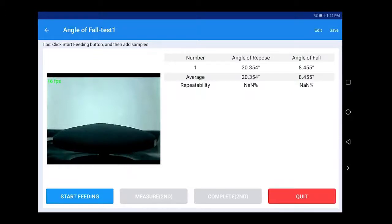Click Complete first, click Save, and click Quit to complete the angle of fall measurement. It is recommended to repeat the test for three times to calculate the average value.